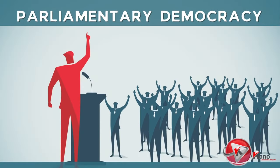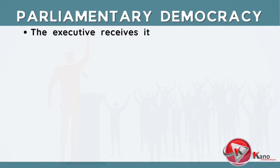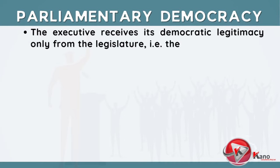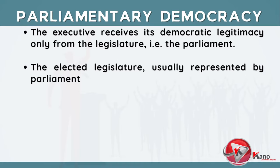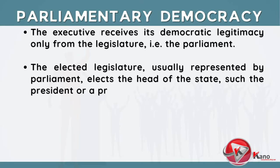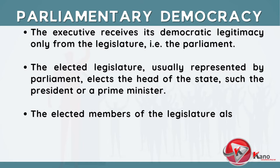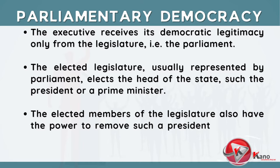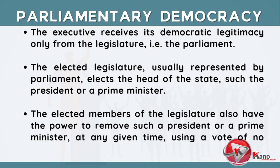A democracy that gives more power to the legislature is called a parliamentary democracy. The executive receives its democratic legitimacy only from the legislature, that is, the parliament. The elected legislature, usually represented by the parliament, elects the head of state, such as a president or a prime minister. The elected members of the legislature also have the power to remove such a president or prime minister at any given time, using a vote of no confidence.